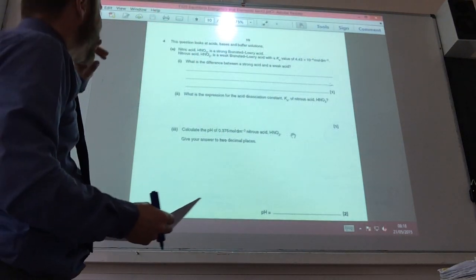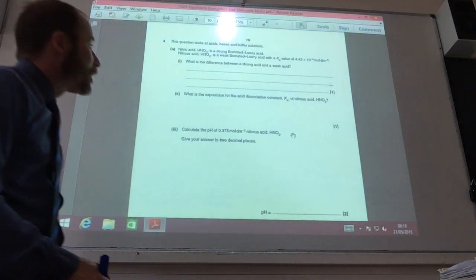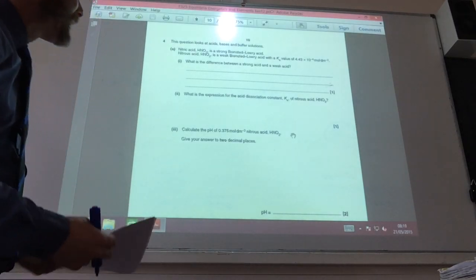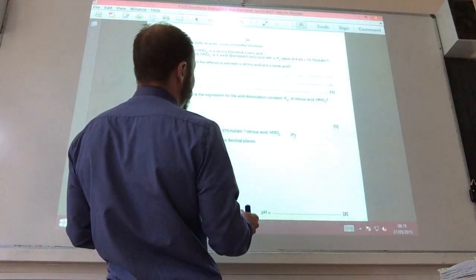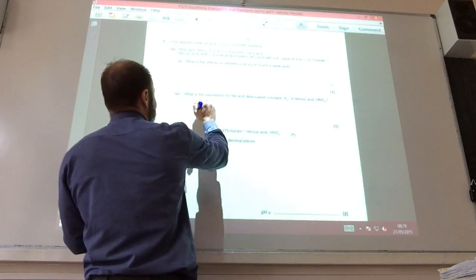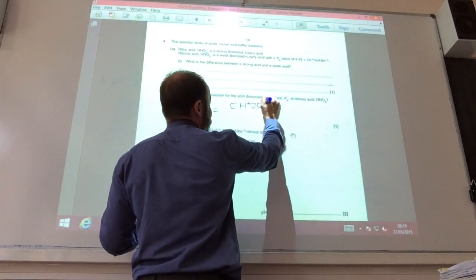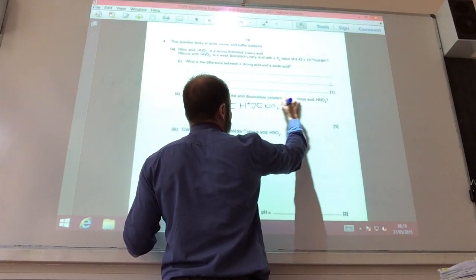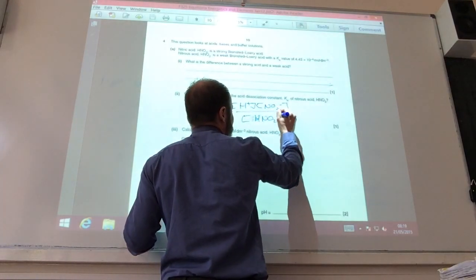What's the difference between a strong acid and a weak acid? A strong acid fully dissociates in solution. A weak acid partially dissociates in solution. Write an expression for Ka for nitrous acid. So Ka equals H plus NO2 minus over HNO2.